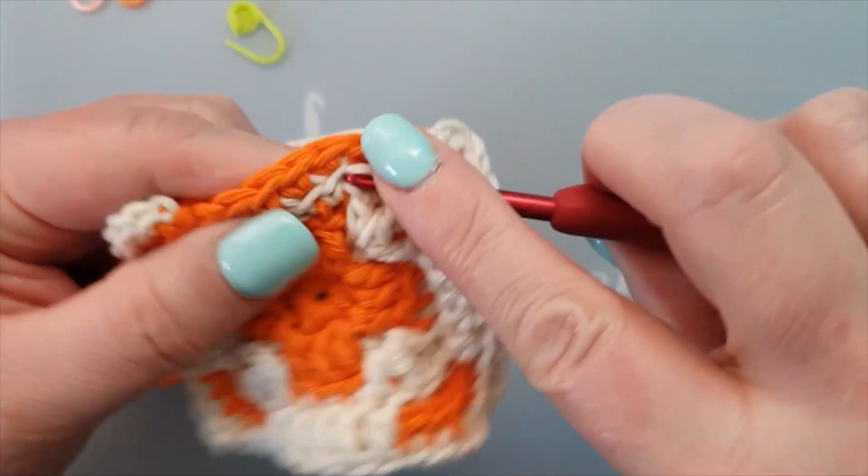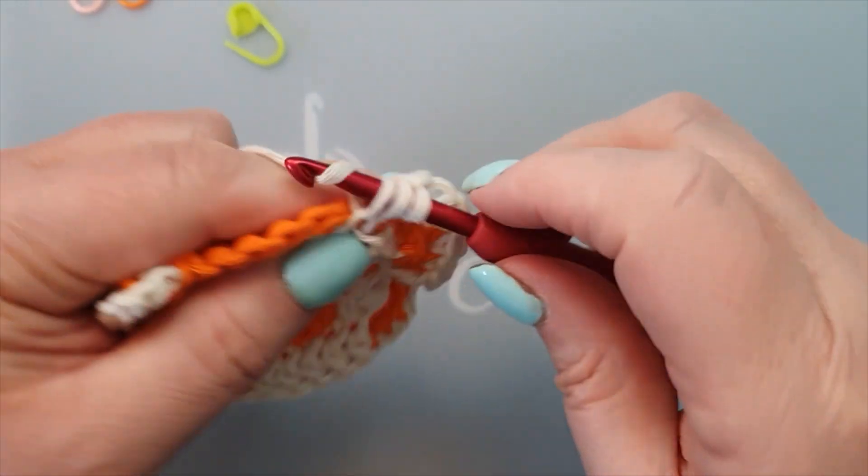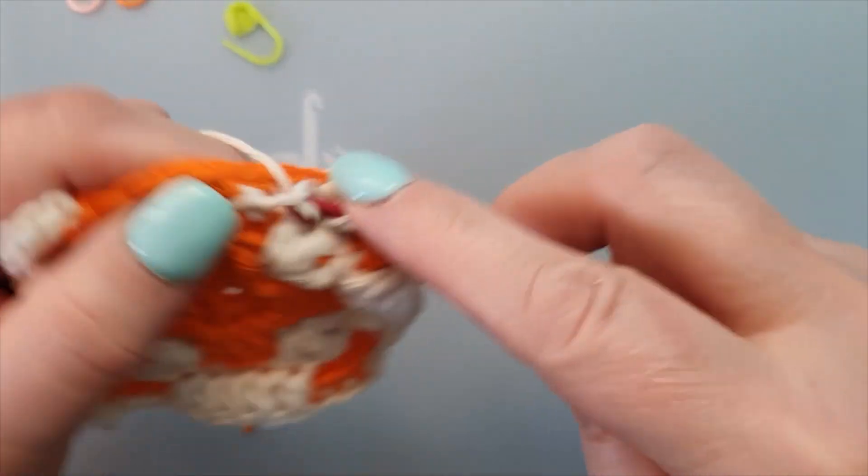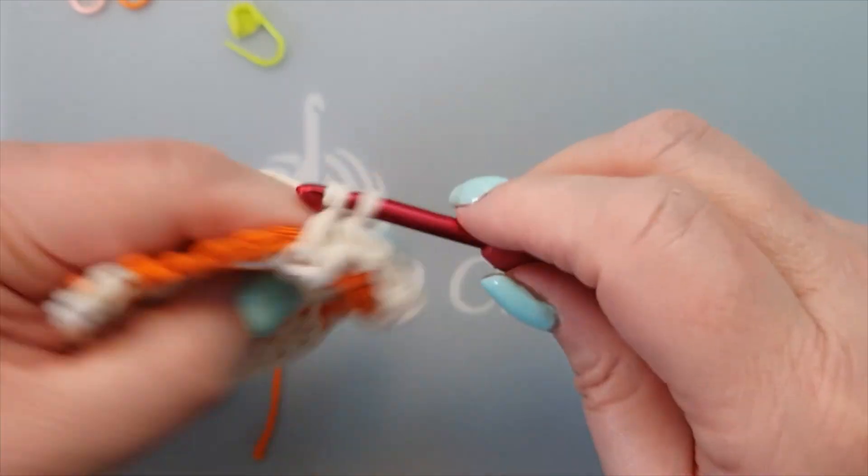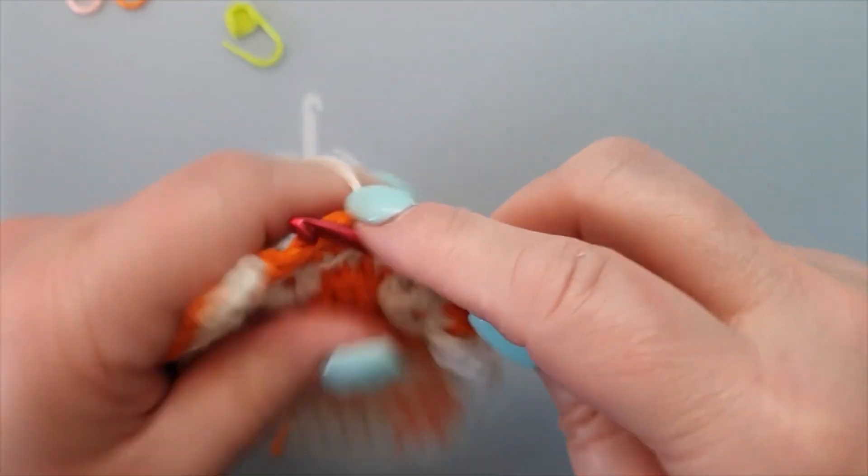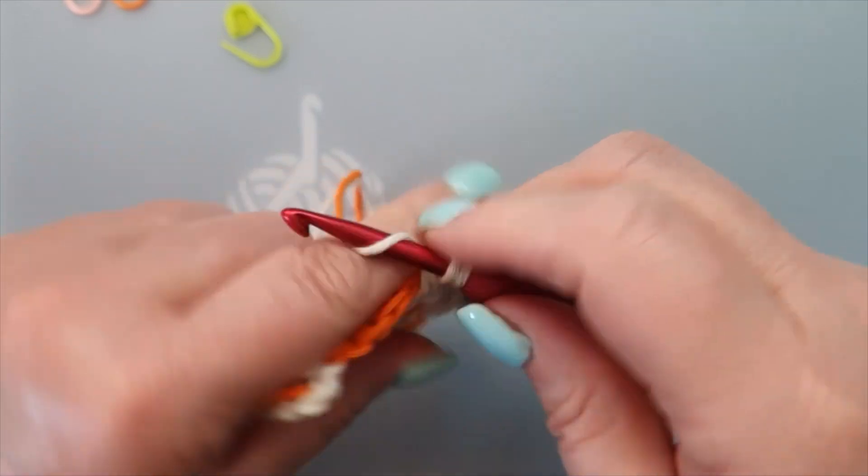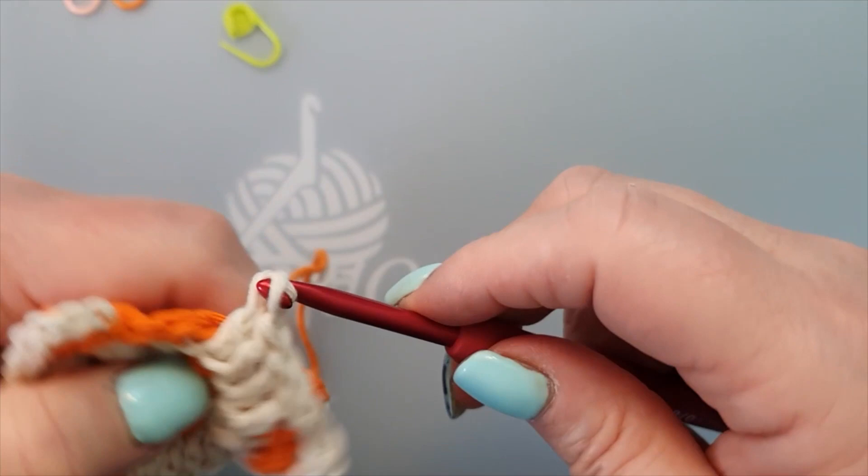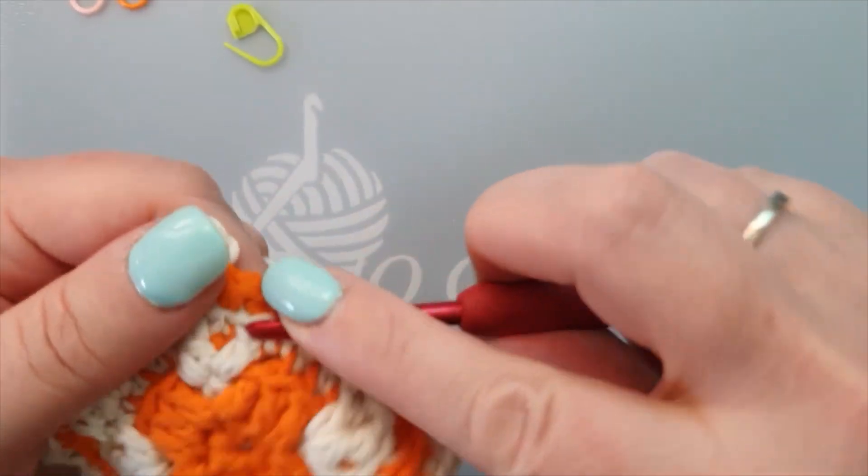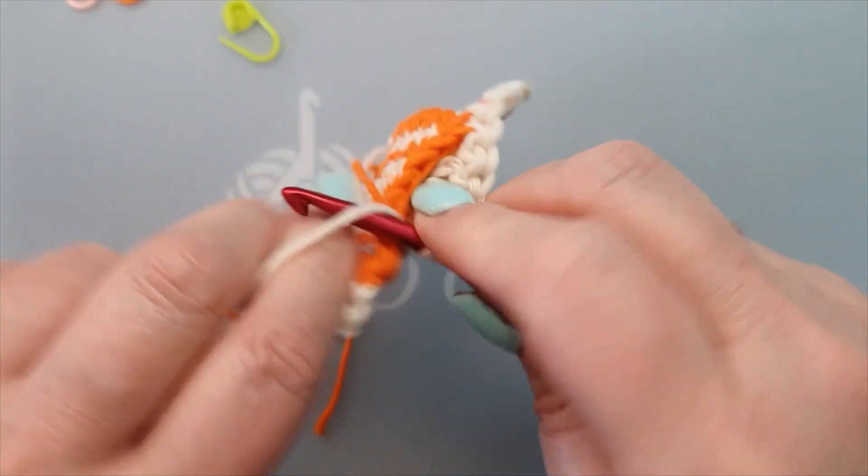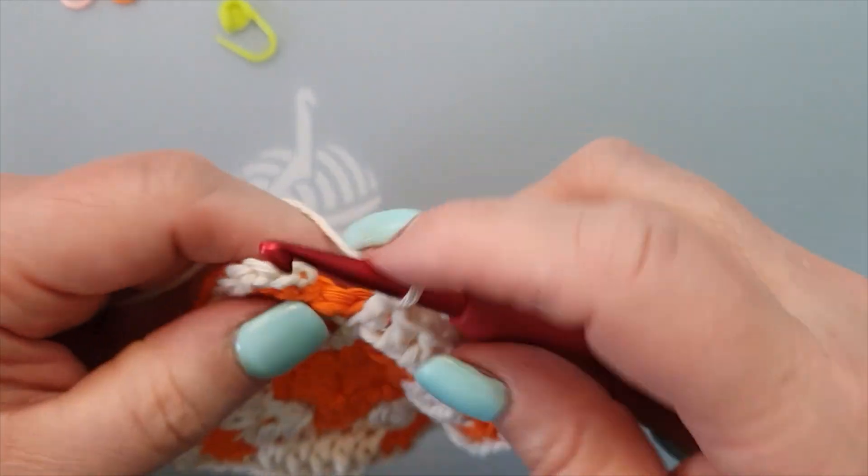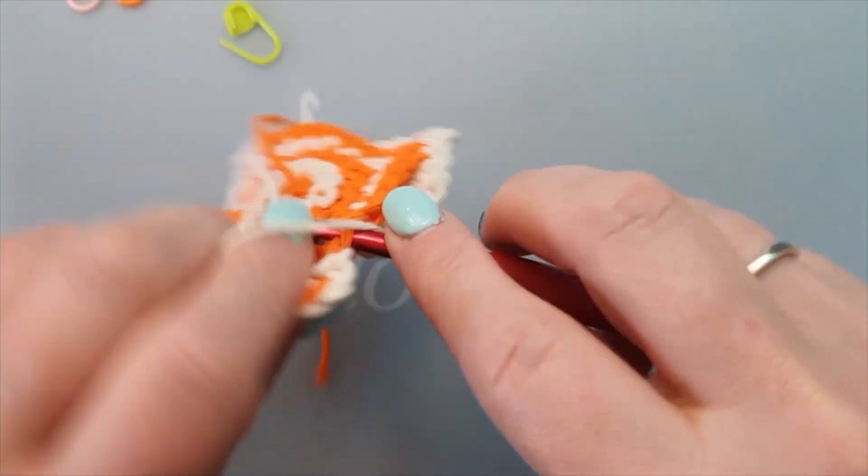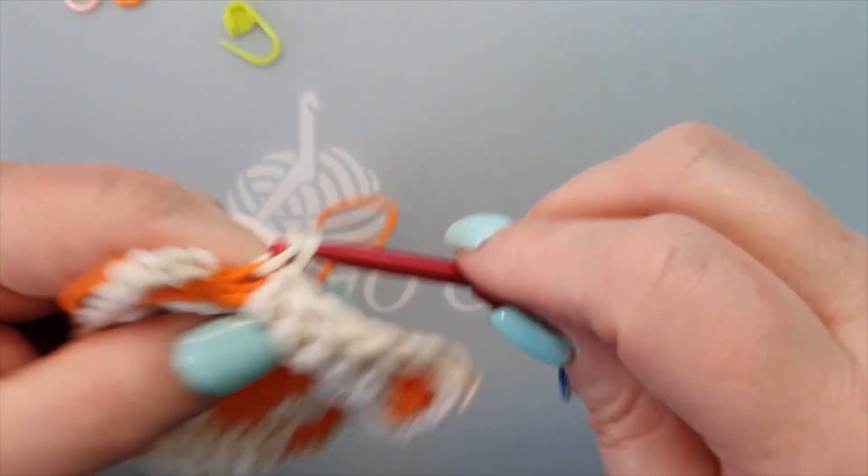Find that first front loop. Five, one, two, three, four, five. Two singles.